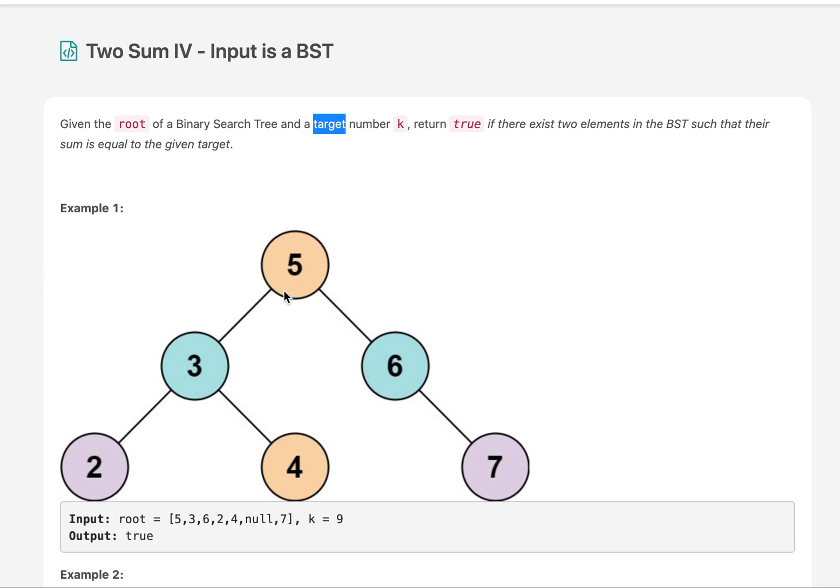Let's try and understand it by an example. This is a binary search tree and the target that we are looking for is 9. So there are two combinations: one is 3 plus 6, other is 2 plus 7. Since we found the total sum of two numbers in the tree that adds up to 9, we return true as an answer.